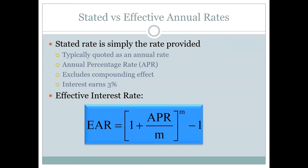You can see the formula here. The effective annual rate is 1 plus the APR — that's the annual rate that's given — divided by M, where M is the number of periods compounded in the year. Note that M does not mean months; it's the number of compounding periods in the year. So if we are talking about daily compounding, then M is going to be 365. This is raised to the M — the number of compounding periods per year — minus 1. This is how we get the effective annual rate.